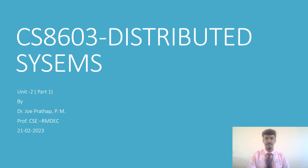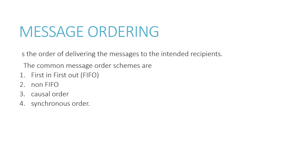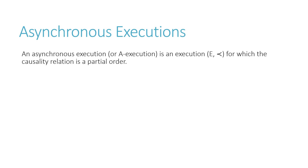Today we'll discuss message ordering. Message ordering is the order of delivering messages to the intended recipients so that they can perform their tasks effectively. There are several schemes or mechanisms for message ordering. Specifically, we have: First-In-First-Out (FIFO) ordering, non-FIFO ordering, causal ordering, and synchronous ordering. We will concentrate on these four paradigms one by one.